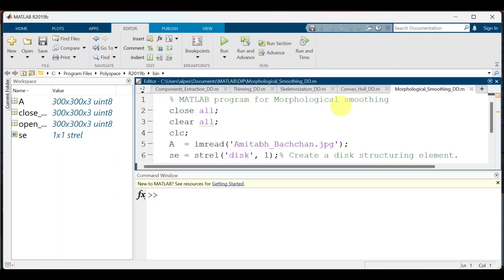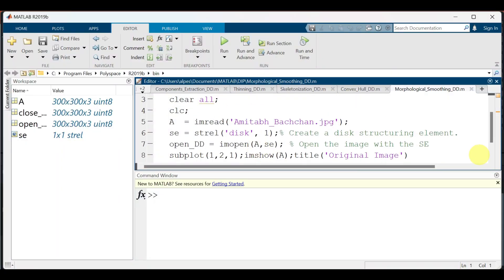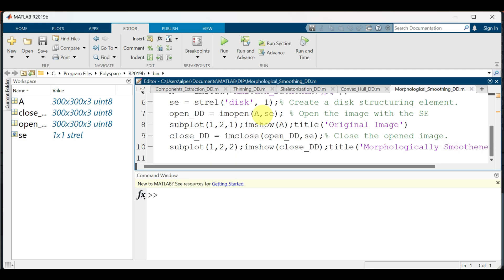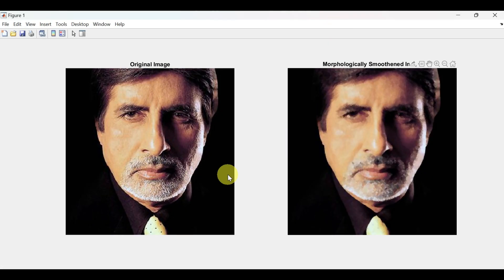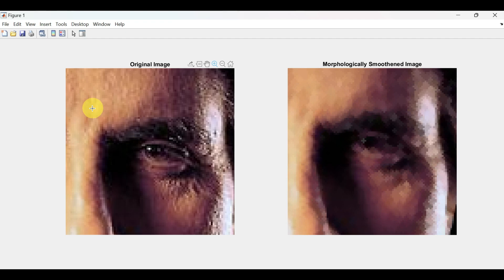This program shows morphological smoothing that is opening followed by closing. Let us run and see the output. So as we can see that the original image is smoothened after opening and closing. That is the wrinkles which are seen here are absent in this image. Let us zoom and see. So you can see that the wrinkles which are visible here as well as here are absent in the smoothened image.